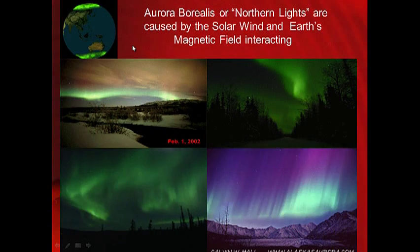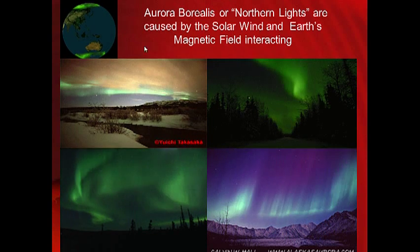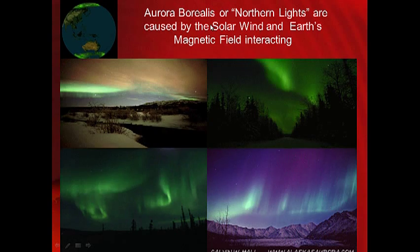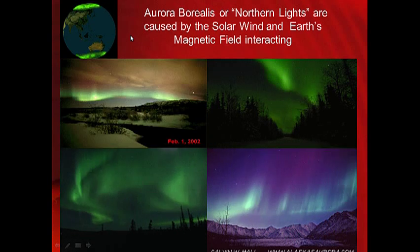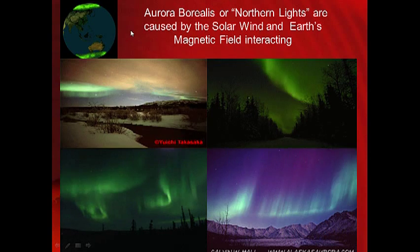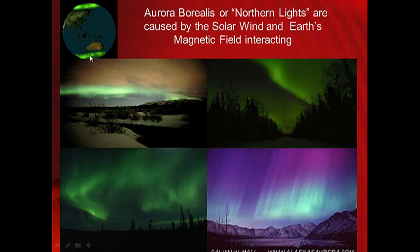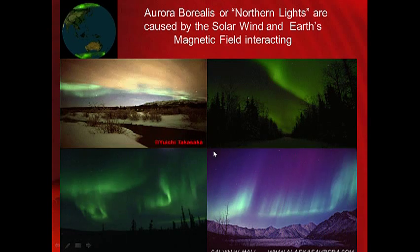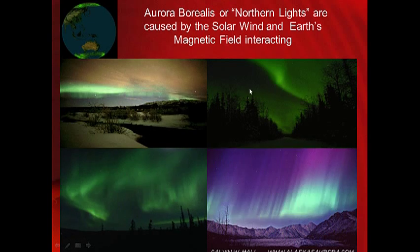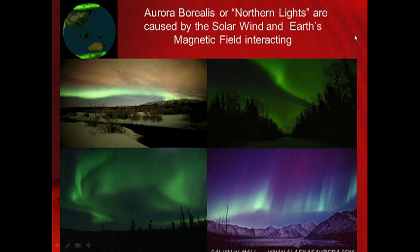Another interesting thing about this magnetic field is that it interacts with the solar wind to create beautiful light displays called the northern and southern lights, or aurora borealis. These charged particles from the solar wind sometimes make their way to earth here at the north and south poles — so the aurora borealis is basically the solar wind interacting with earth's magnetic field at the poles.